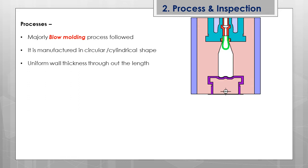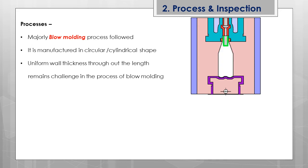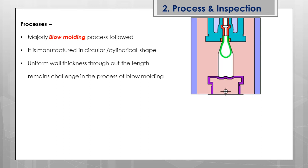Uniform wall thickness is a major challenge in blow molding, because the air pressure at different sections will differ due to the travel of the plastic raw material. During the development stage, the maximum and minimum wall thickness is set, and accordingly the process is designed.